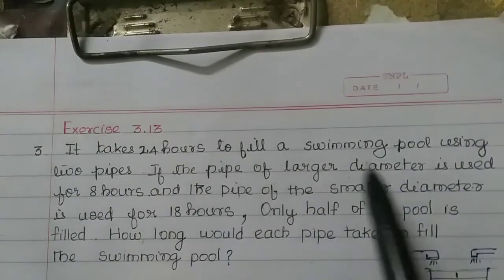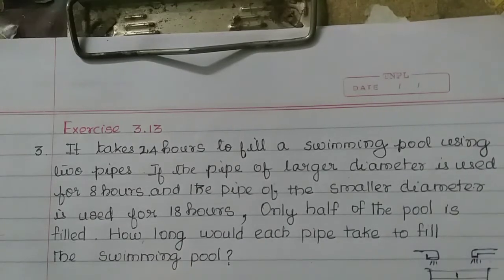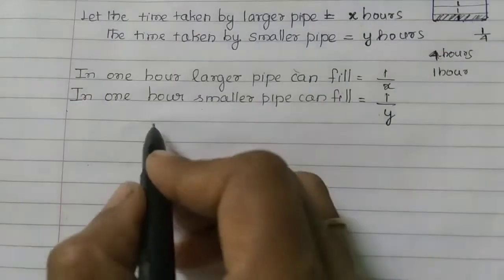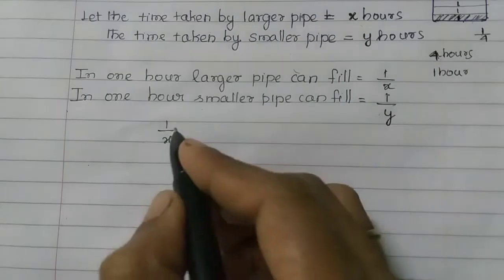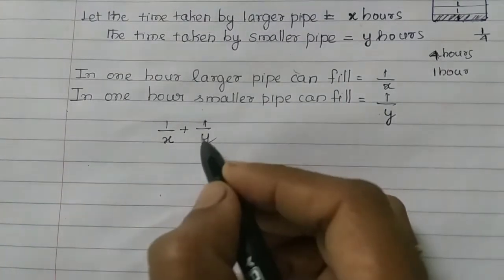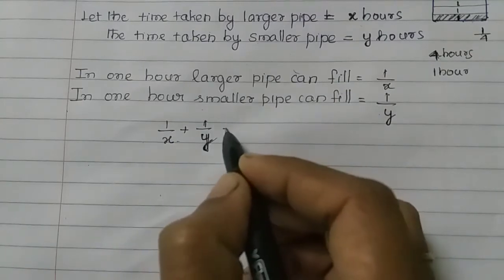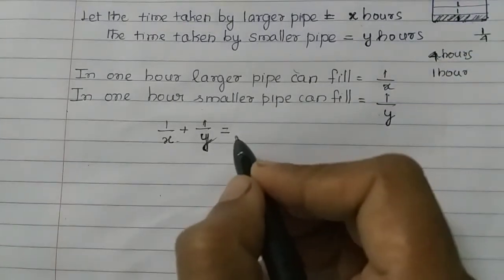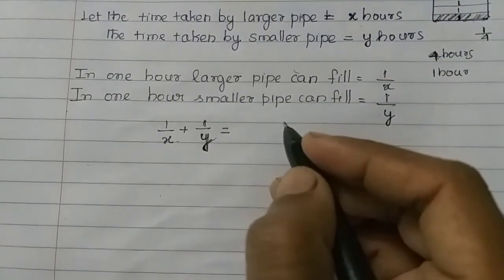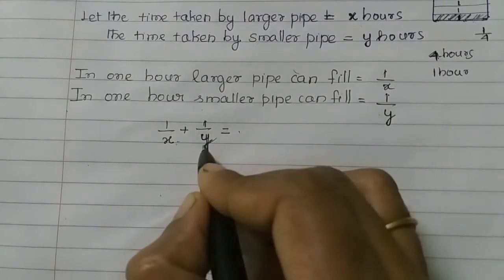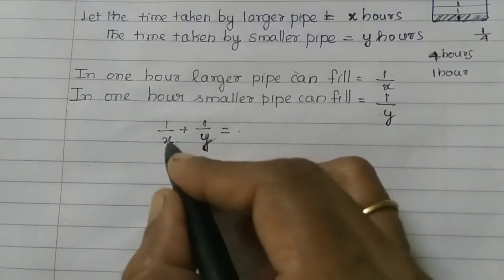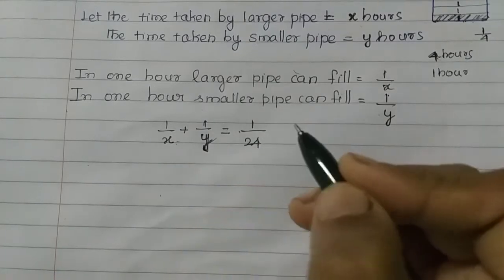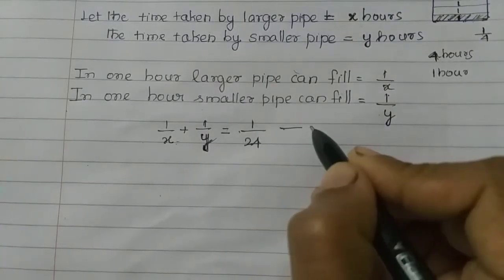It takes 24 hours to fill a swimming pool using both pipes together. So in one hour, both pipes together fill 1/24 of the pool. Therefore, 1/x plus 1/y equals 1/24. This is our first equation.